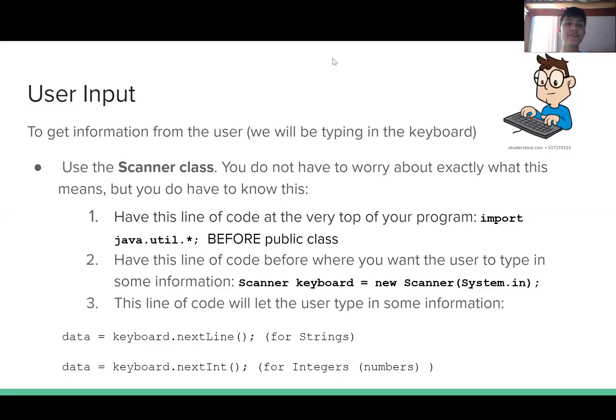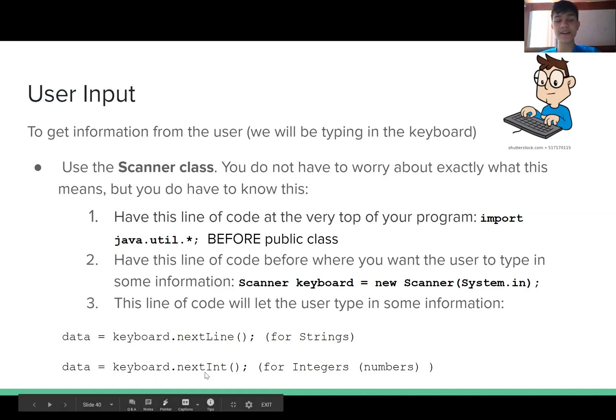Now we will talk about user input. To get information from the user, you will get information from them from the keyboard. To do this, we use the scanner class. You do not have to worry about exactly what this means, but you do have to know a few things about it. You want to have the line import java.util.*; before your public class at the very top of your program. You also want to have scanner keyboard equals new scanner system.in before you ask for user input. data equals keyboard.nextLine is what you use for strings, and data equals keyboard.nextInt is what you use for integers.